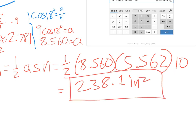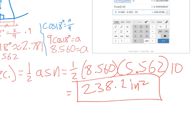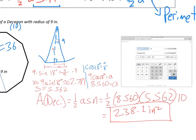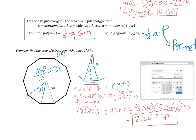That's the process: one-half ASN or one-half AP. We're just finding the area of one triangle using trigonometry and multiplying it by the number of sides. Work hard and you'll get it with a little bit of practice. Have a great day.